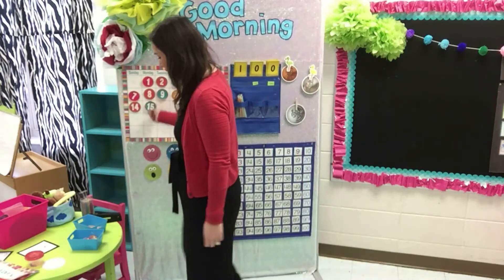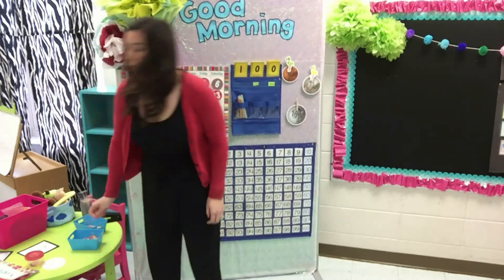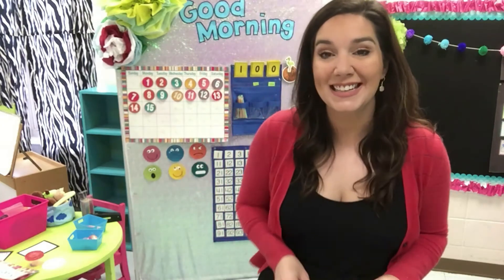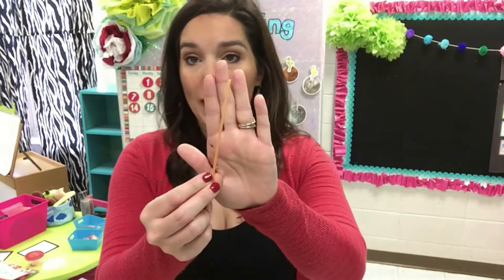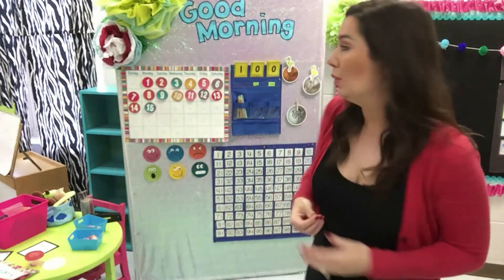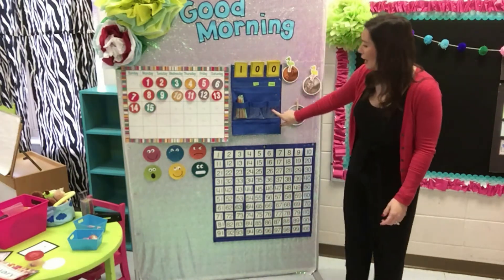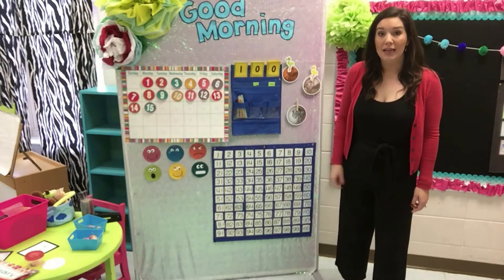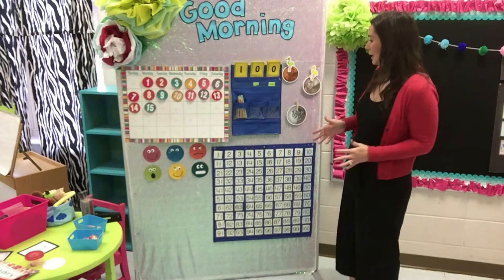Let's figure out how many days we've been in school. Friday we've been in school for 100 days. We're going to add one more — just a one — because today is just one more day, and I'm going to put it all the way over in my ones column. Now I want to count. It's the same rule.